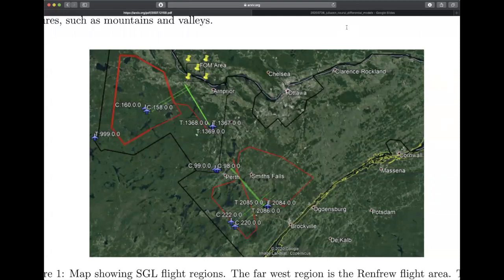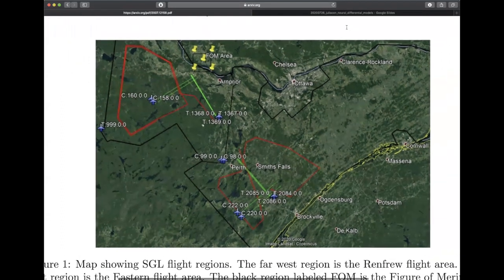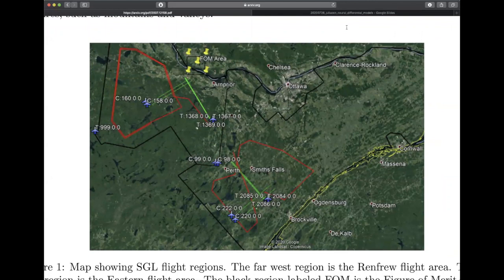Something to keep in mind when looking at this data set is that there are three distinct locations where we collected our data. The westernmost location is the Renfrew flight area, denoted by that red polygon on the left, and the easternmost location is the eastern flight collection area, denoted by that red shape on the bottom right of the image. The final location is the figure of merit area — that black square on the top middle with the pins — which is used for conventional calibration. We asked Sanders to collect data while doing this conventional calibration so that we had a baseline to compare our results to those yielded through conventional calibration, such as the Tolles-Lawson equation.